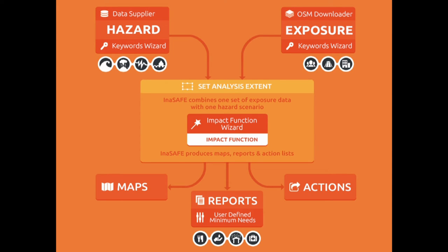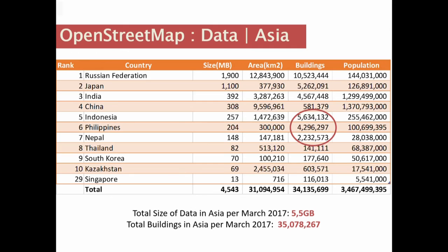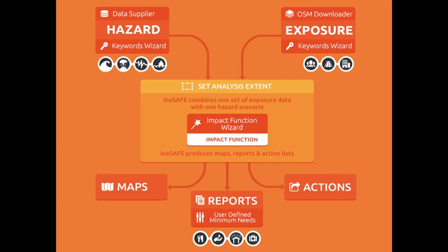Specifically for Indonesia — because I come from Indonesia — the 5.6 million building count comes from a project funded by the Australian government in partnership with the Indonesian government, starting in 2011, to develop a software called InaSAFE. InaSAFE receives hazard input, for example floods in Jakarta, and calculates how many buildings, roads, and people will be affected by a particular disaster. It then gives results in the form of maps, reports, or action points. The challenge when developing this software was that we didn't have good data — specifically road and building data, which are quite dynamic and hard to obtain quickly.